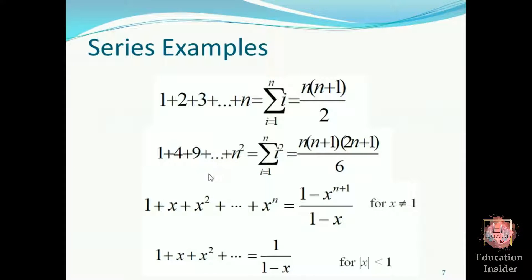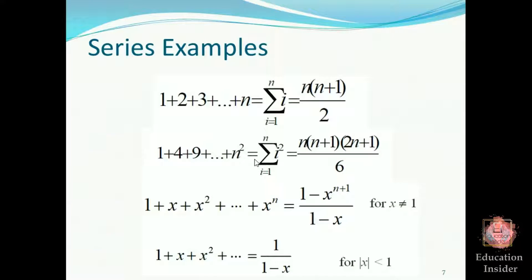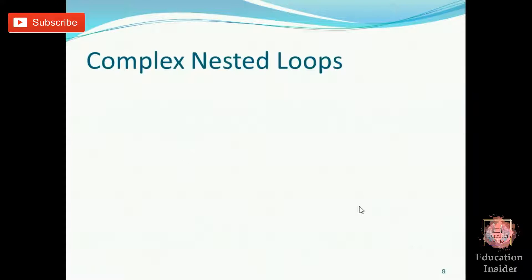These are formulas for series that will be helpful in the next videos. The first formula is used when loop iterations increase in an increasing fashion: 1, 2, 3, 4, up to n. The second formula is used when loop iterations increase in a squared fashion: 1, 4, 9, up to n². The other two formulas will be covered when we handle the remaining topics.